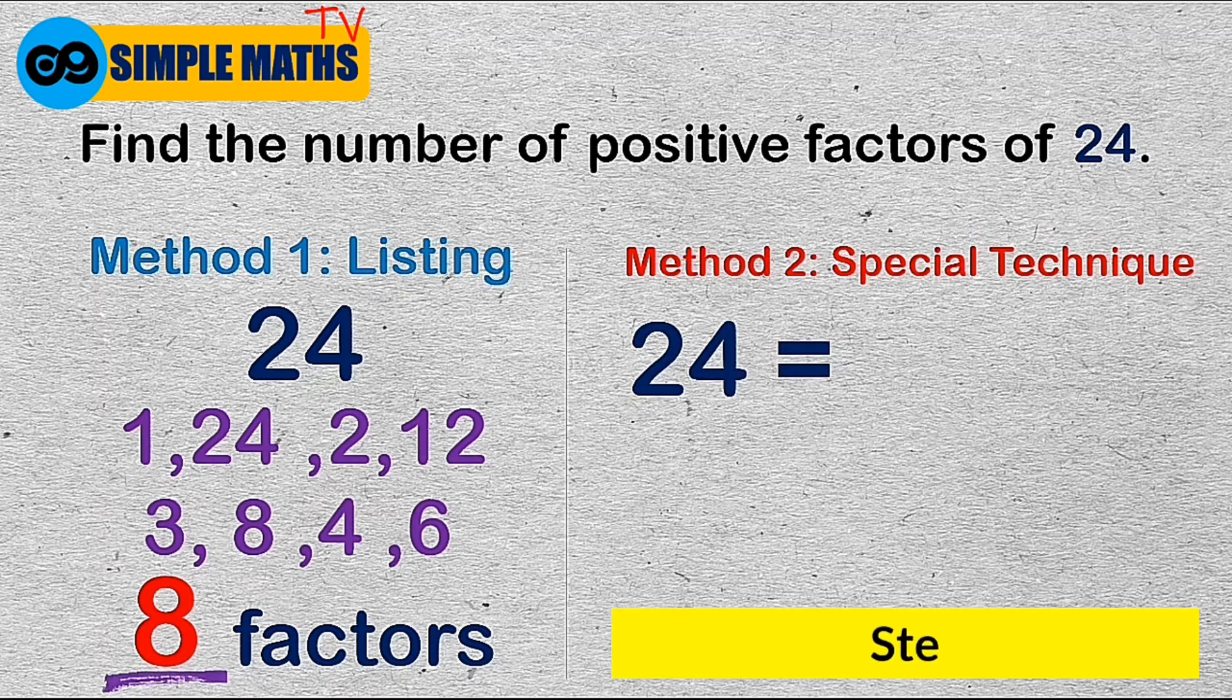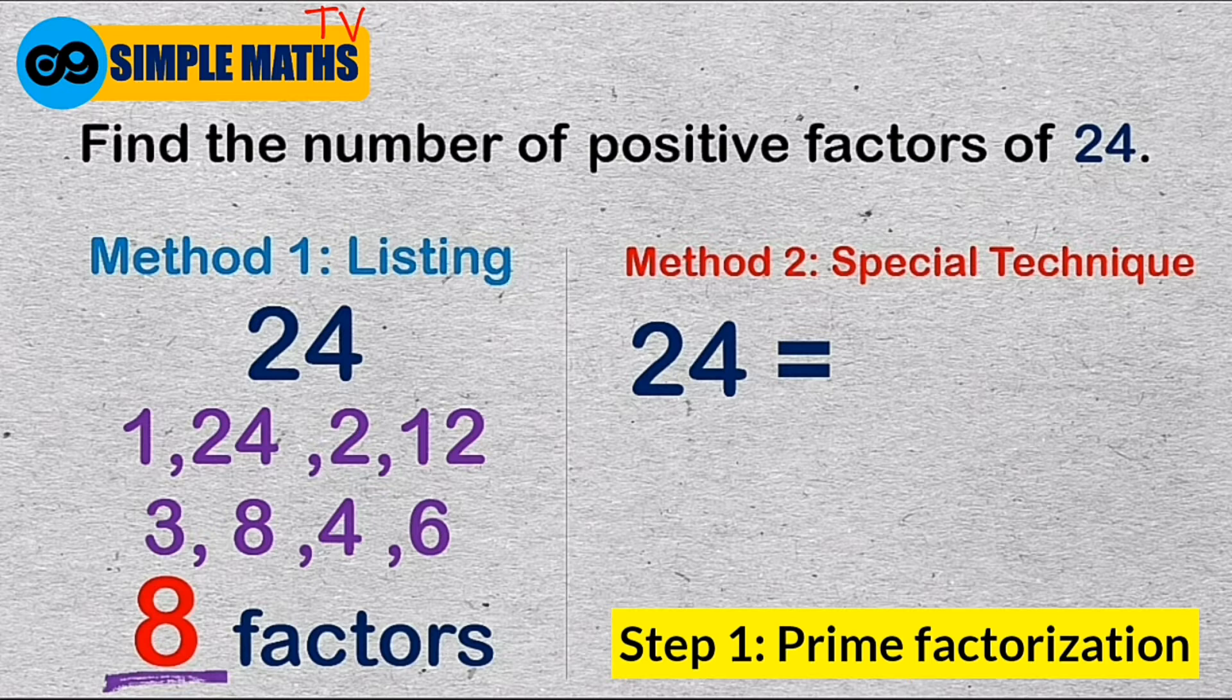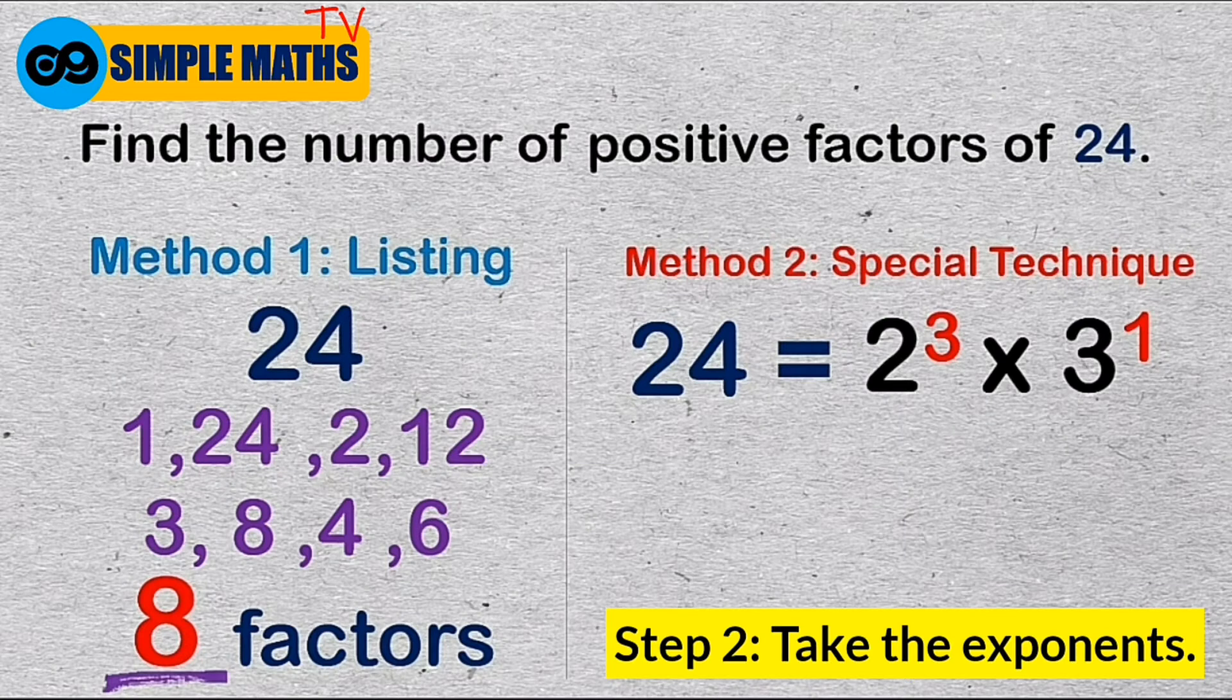The first thing that we need to do is to write the prime factorization of 24. That's 2 cubed times 3. Next, we take the exponents of the prime factors. In this case, 3 and 1.